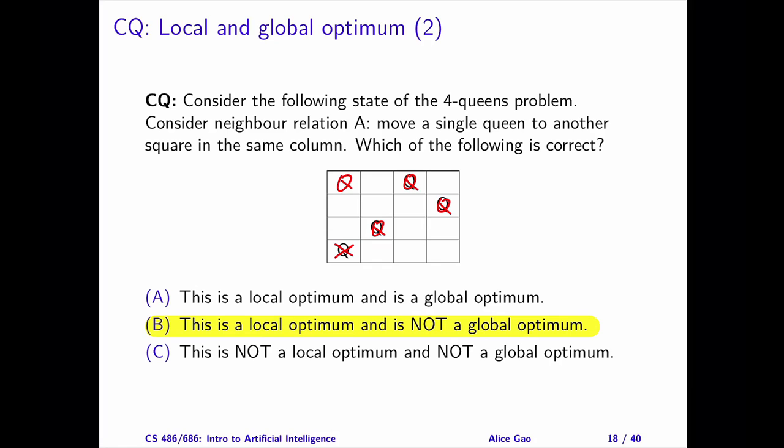For example, if we move the leftmost queen to the top left square, then we will have two pairs of attacking queens. The cost of this neighbor is 2. If we move the third queen down by 1, we will have four pairs of attacking queens: 0 and 1, 1 and 2, 0 and 2, and 2 and 3. The cost of this neighbor is 4.